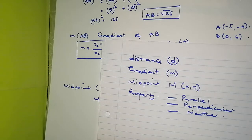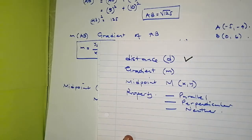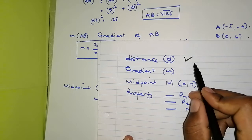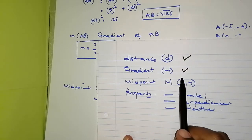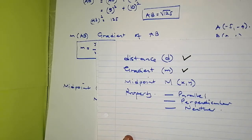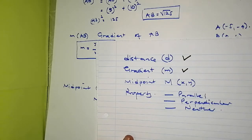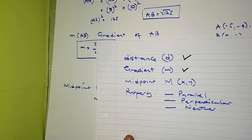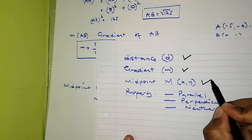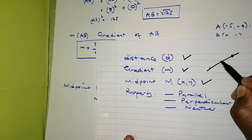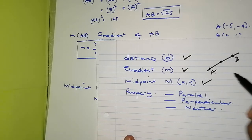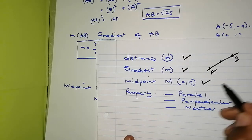We are almost done. We're able to find the distance, which is a measure of length. Then the gradient, which measures the steepness of a line — the change in Y with respect to the change in X values. And the midpoint — we're able to find that given points A and B.